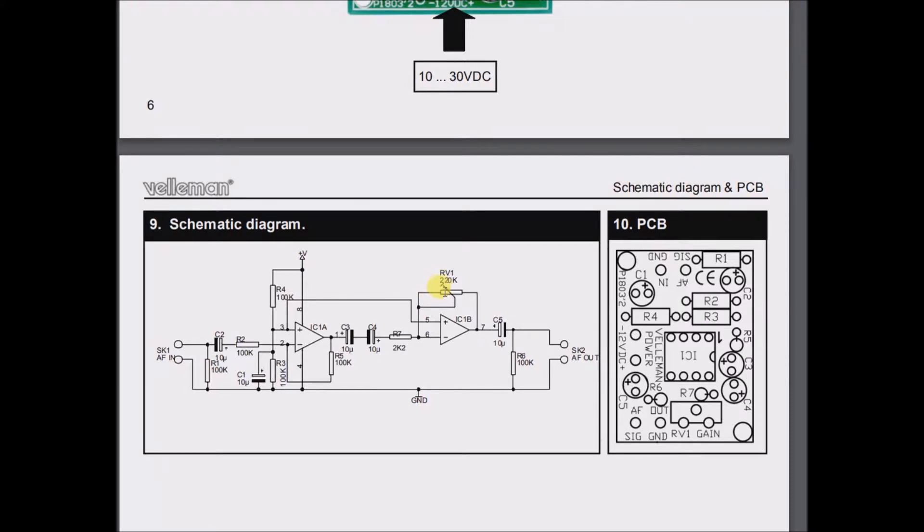then obviously you have less voltage in the feedback loop coming through. And this is the inverting pin. So if you have less resistance, or if you have more resistance, less voltage,